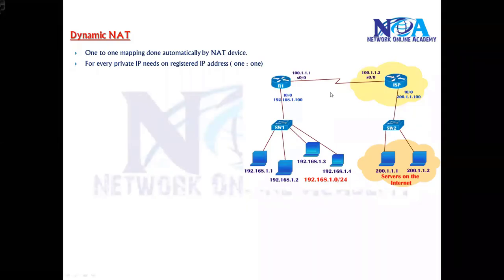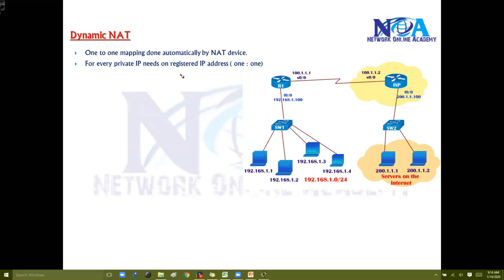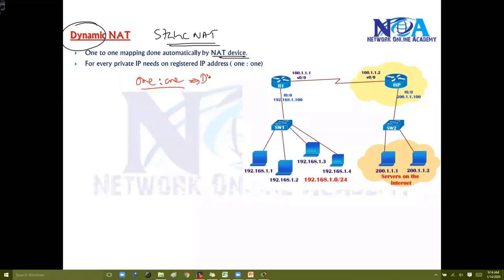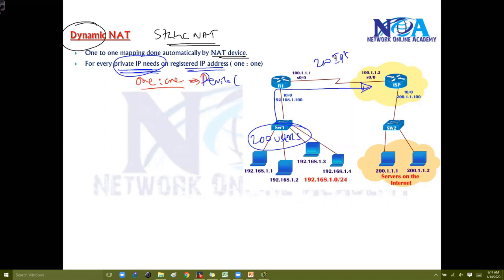The second type is dynamic NAT. In dynamic NAT, it is also a one-to-one mapping, but the mapping is done automatically by the NAT device. Dynamic NAT is essentially equivalent to static NAT in that respect — one private IP address gets mapped with one public IP. The only difference is the mapping is not done manually by the administrator, but instead the device does it dynamically. However, every private IP still requires one registered public IP, meaning if you have 200 users all needing internet access at the same time, you still need 200 public IPs.